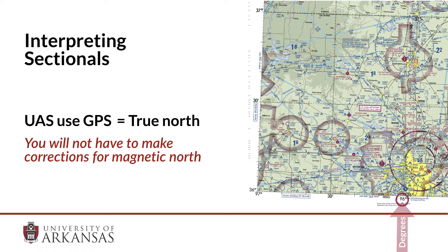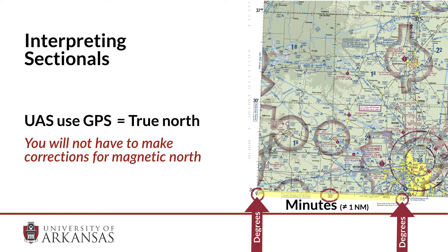You will see the 96 and 97 degrees of longitude with the halfway point of 30 minutes marked midway. It's important to note this is west of the prime meridian, so that the longitude would be 97 degrees 30 minutes west. There are a total of 60 minutes, represented by the small marks, between each degree of longitude. Remember, the 30 minutes does not mean 30 nautical miles for longitude.